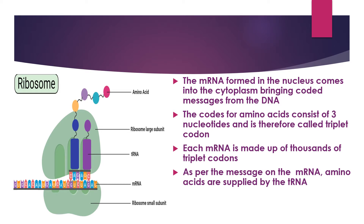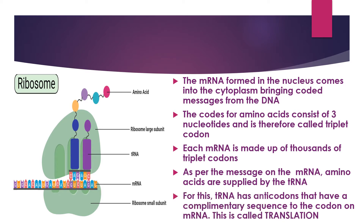The tRNA supplies complementary codes as per the message on the mRNA, and amino acids are supplied by the tRNA accordingly. For this, the tRNA has anticodons — groups of three nucleotides that have a complementary sequence to the codon on the mRNA.